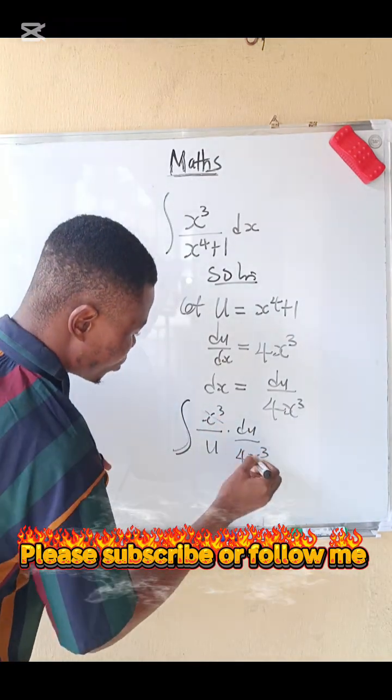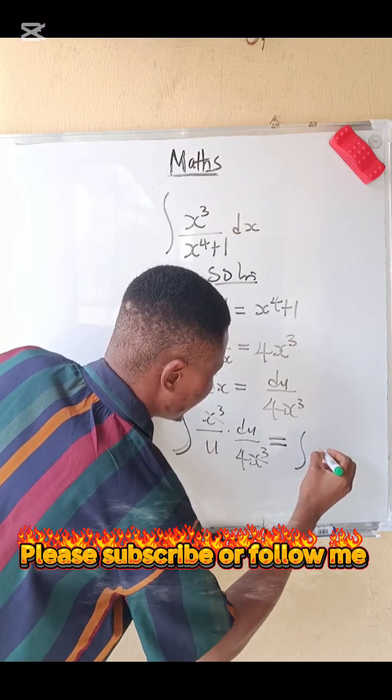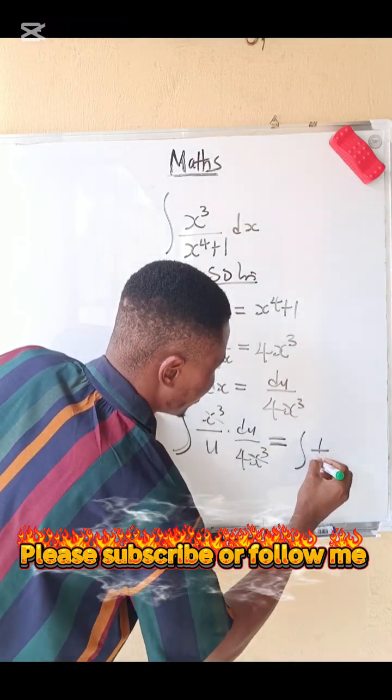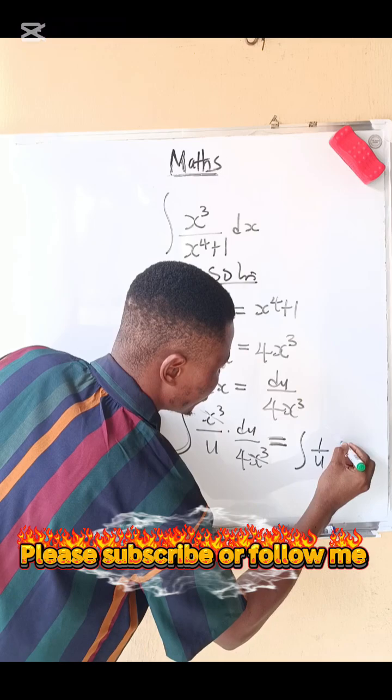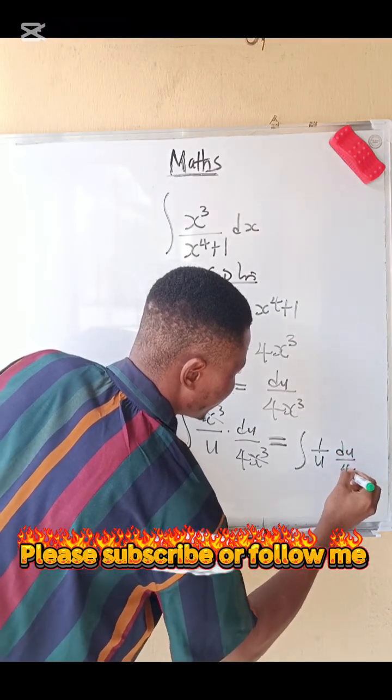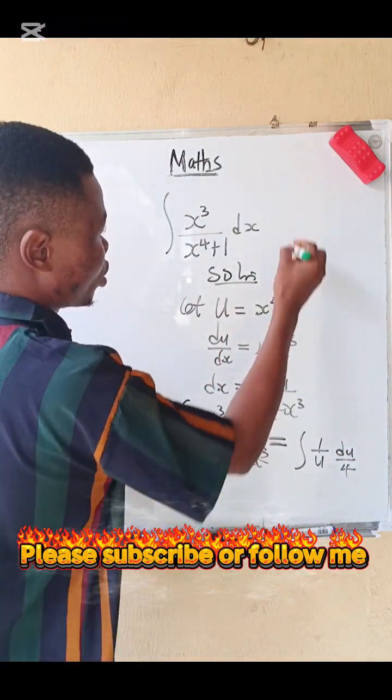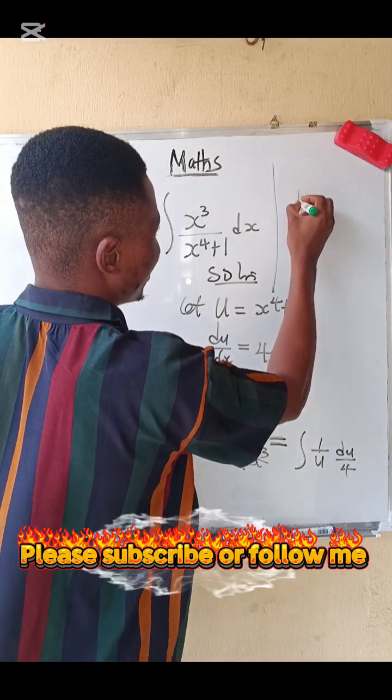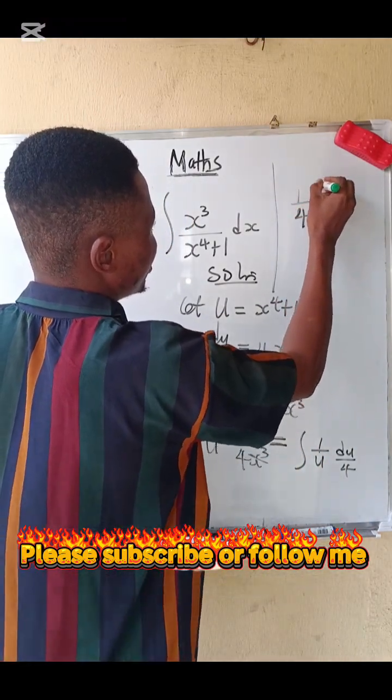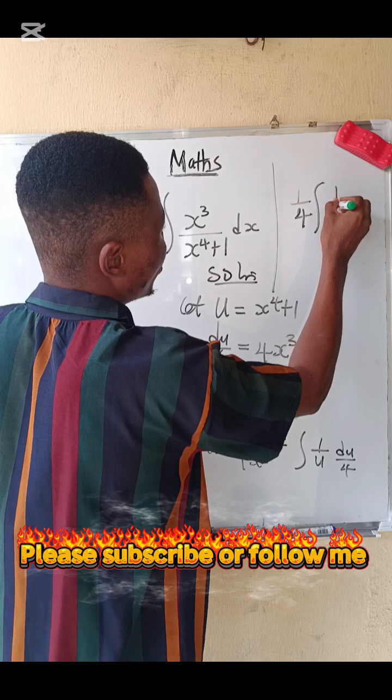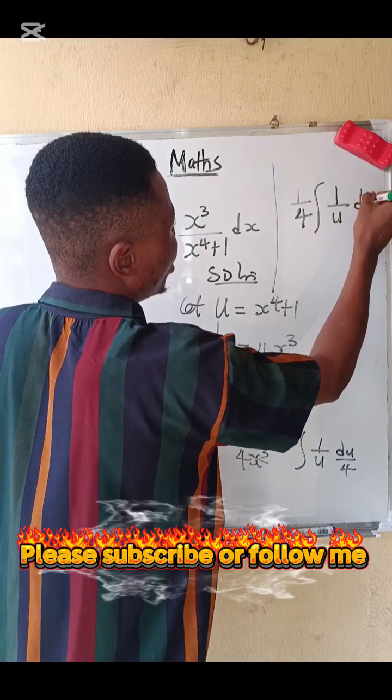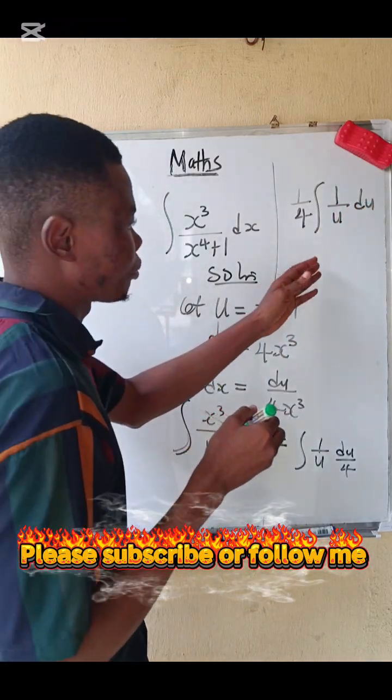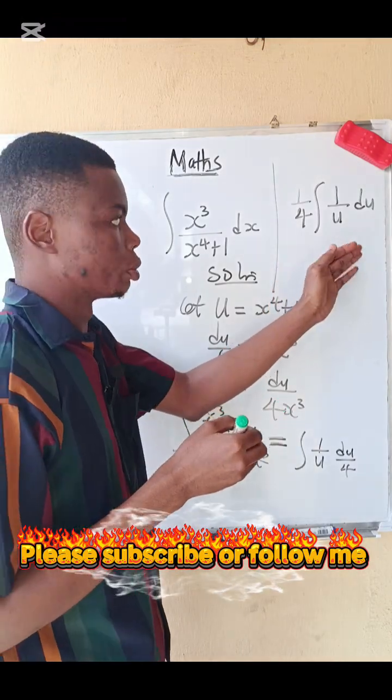So we have an integral of 1 over u and du over 4. From here, take 1 over 4 outside, so we have 1 over 4 integral of 1 over u du.